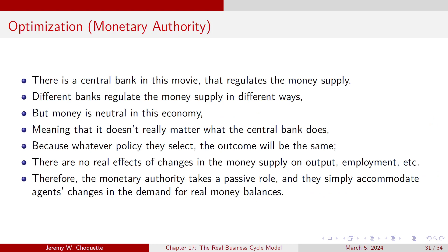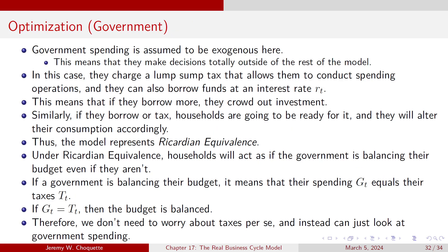There's a central bank that regulates the money supply. In this economy, money is neutral — so it doesn't really matter what the central bank does. There are no real effects of changes to the money supply on output or employment. The monetary authority takes a passive role, accommodating agents' changes in demand for real money balances by setting money supply equal to money demand.